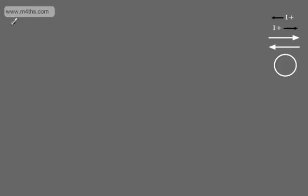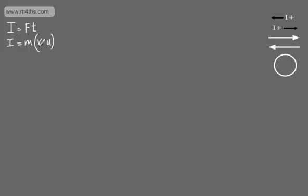Let's just recap impulse and momentum. Impulse was given as either force multiplied by time, so I is equal to Ft, or we could write impulse as m, which was the mass, multiplied by the final velocity minus the initial velocity. These were vector quantities, and the units we used were newton-seconds.